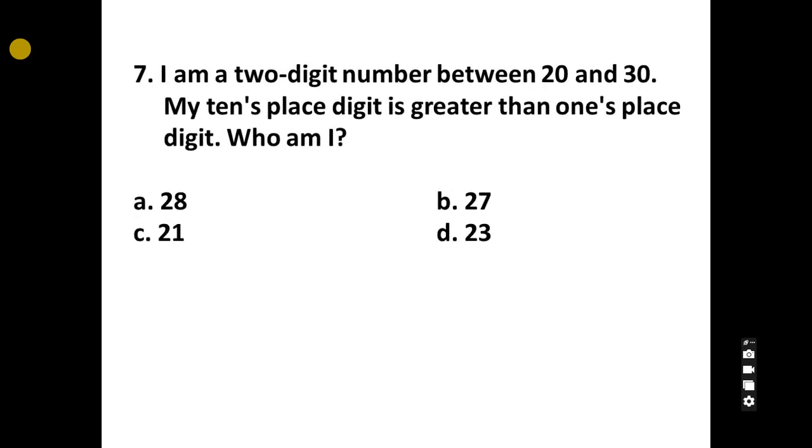7. I am a 2-digit number between 20 and 30. My 10's place digit is greater than 1's place digit. Who am I? A, 28, B, 27, C, 21, D, 23.